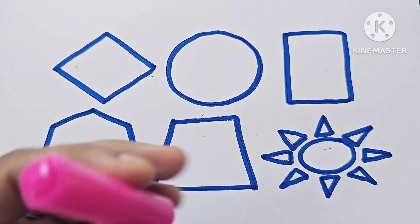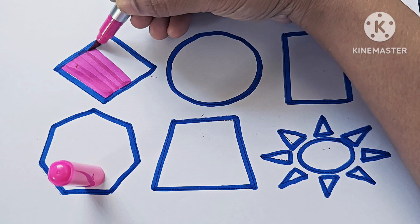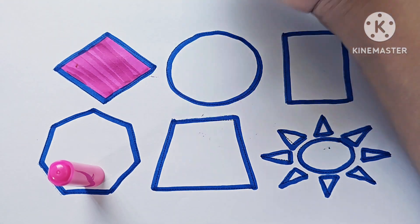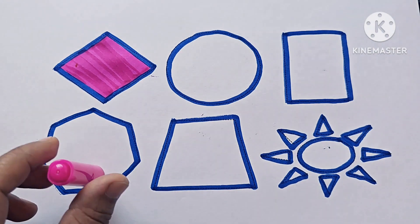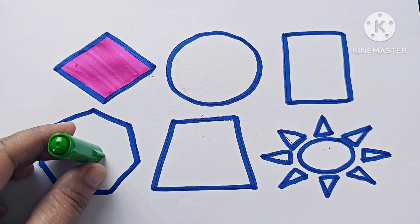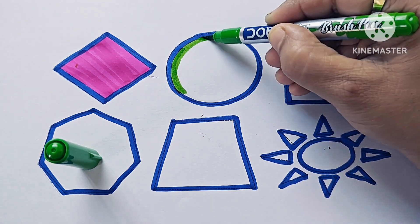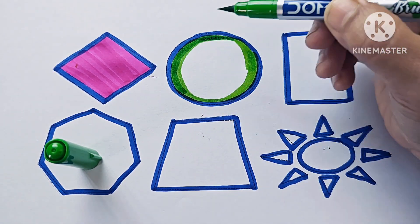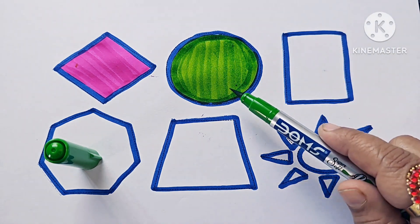Pink color rhombus or diamond, light green color circle.